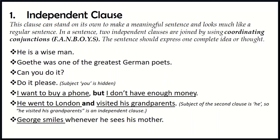'Gosse was one of the greatest German poets' — it's also one complete thought. 'Can you do it?' — 'you' is the subject, 'do' is the verb, and 'it' is the object. So it's asking you, can you do something? It's one thought that I have an idea and I want to ask you something about that.